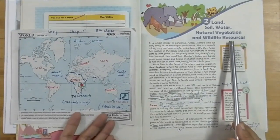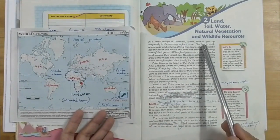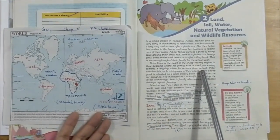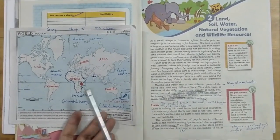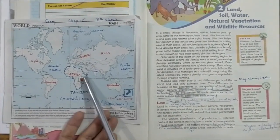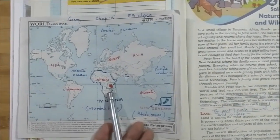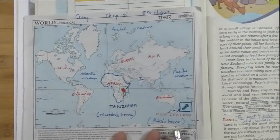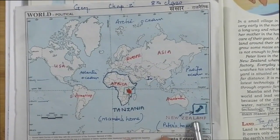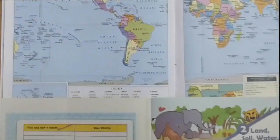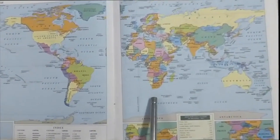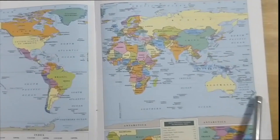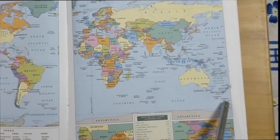Before starting the chapter, I will go through two extracts about the life of two small kids living in two different parts of the world — Mamba, who is living in Tanzania, Africa, and Peter, who is living in New Zealand. If we can see our atlas also, this is Tanzania here in Africa and New Zealand in the Pacific Ocean.